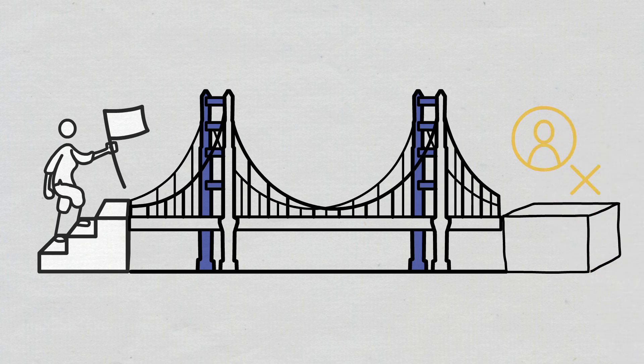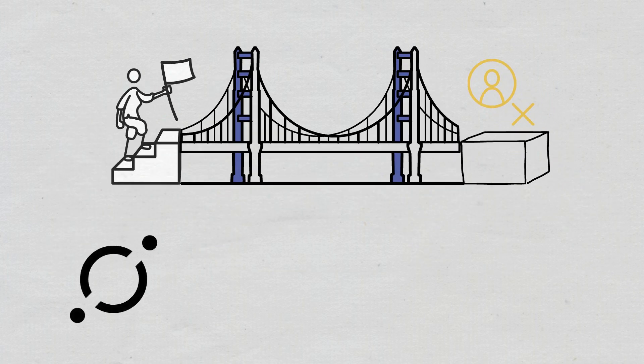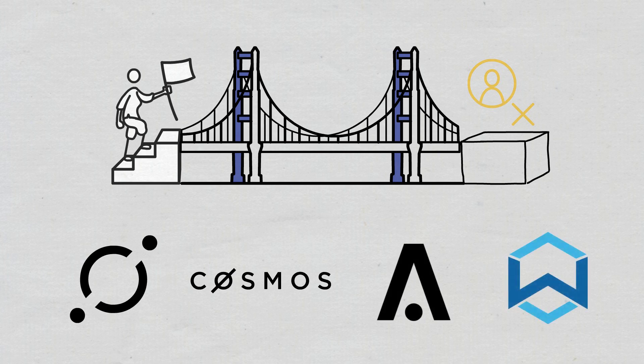Other examples of ecosystems that use these bridges are Icon, Cosmos, Aeon, and OneChain.